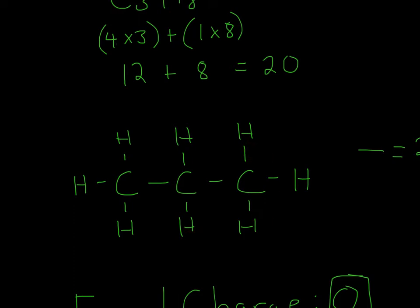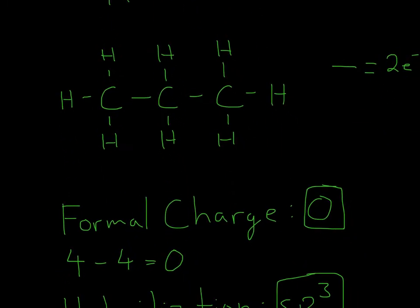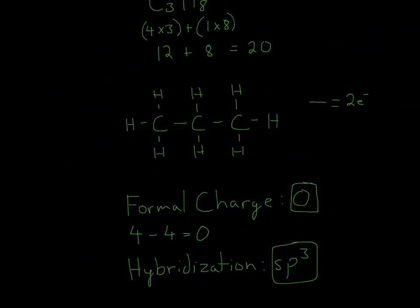Now let's look at why this is zero formal charge. For each carbon, let's count the number of dashes. 1, 2, 3, 4. 4 minus the group number of carbon, which is 4, gives 4 minus 4 equals 0. Once again: 1, 2, 3, 4. 4 minus 4 is 0. And once again: 1, 2, 3, 4. 4 minus the group number of carbon, which is 4. 4 minus 4 is 0.